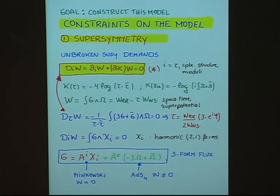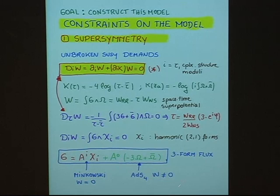If you only turn on the first component A_i, what you get is a Minkowski solution because the superpotential is equal to zero. If you turn on the second component, you get compactifications to AdS₄, as W is different from zero. This part here is imaginary self-dual, which will be important in a moment. This part here is imaginary anti-self-dual.